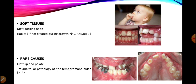The third major contributing factor is soft tissue — specifically, non-nutritive sucking habits. When there is any non-nutritive sucking habit, it leads to a lowered position of the tongue in the mouth, which increases the negative pressure on the maxillary posterior teeth and can lead to the creation of a posterior crossbite. If the habit is not treated during the growth phase, it may lead to development of a permanent posterior crossbite that has to be treated later.